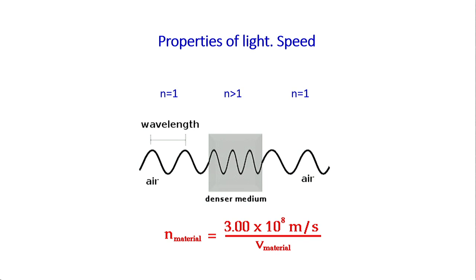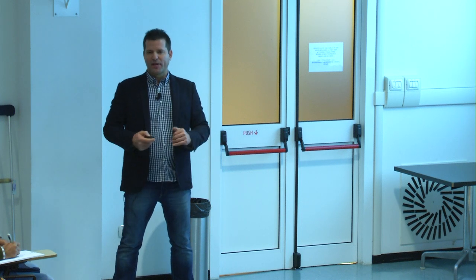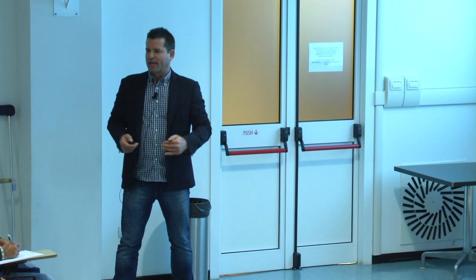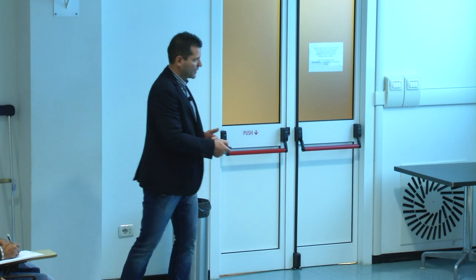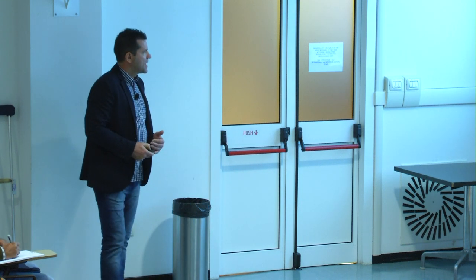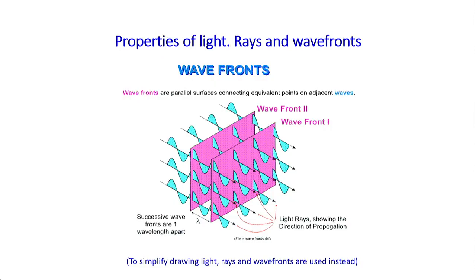Let's also speak about the speed of light. In vacuum or in air, the speed of light has a known value. But when light enters a medium, the speed is reduced and the light changes its wavelength — not the frequency, the wavelength. The relation between the speed of light in air and in the medium is what we call the refractive index. This is a very important parameter that we will use in microscopy — for selecting materials for lenses and so on.